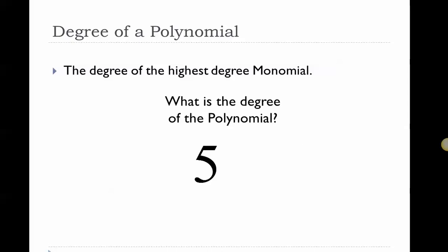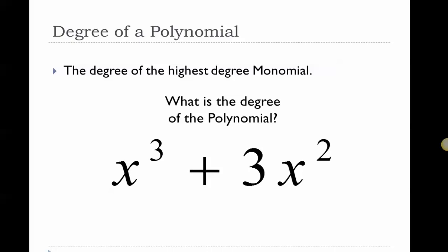Five — we talked about this before. It's a zero degree monomial, and that's the highest degree monomial in this polynomial, so this polynomial is zero degree. The leading coefficient is five — it's the only coefficient. How about x³ + 3x²? The first monomial is a third degree monomial, the second is a second degree monomial. The highest degree is third, so this is a third degree polynomial with a leading coefficient of one.